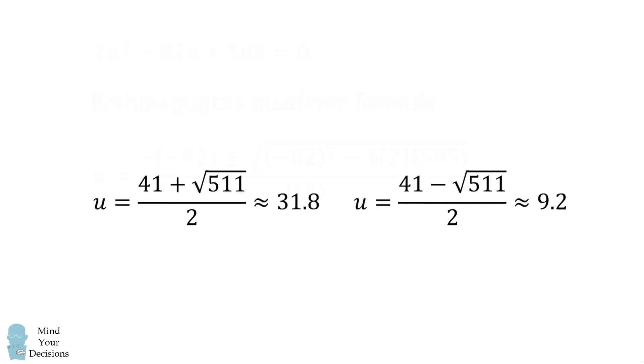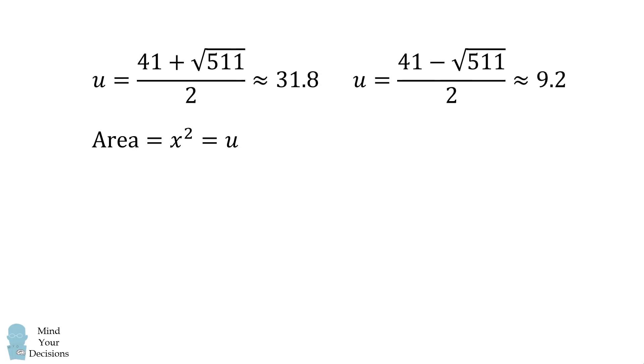Let's now consider these two possibilities. Recall the area is equal to x squared, which is equal to u. So we'll substitute back in for x squared. Now recall that a is equal to 12 minus x squared all over 2x.